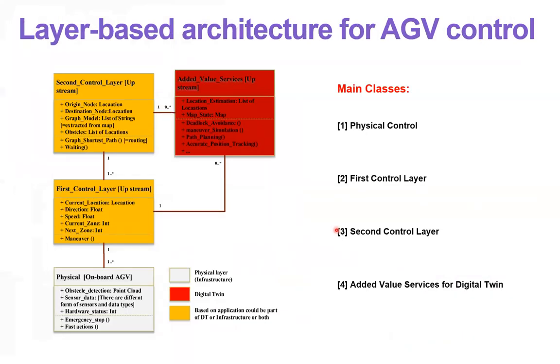And here, you can see the layer-based architecture we considered for our AGV to show and evaluate our work. We considered this layer-based system. For example, the second control layer, first control layer, and the actuator layer can work together to provide efficient maneuvers for AGVs.